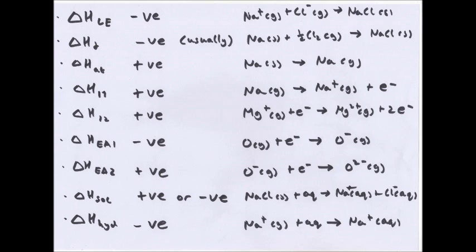Solution is when you fully dissolve a whole structure in water or aqueous conditions. So sodium chloride is dissolved and forms sodium ions and chloride ions in aqueous conditions. Hydration is similar but happens to just one ion — so a sodium ion in the gaseous state is hydrated to form a sodium ion in aqueous conditions.